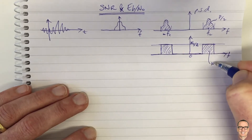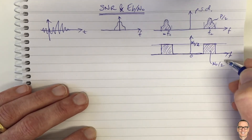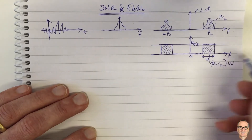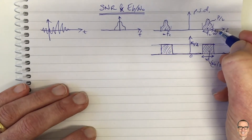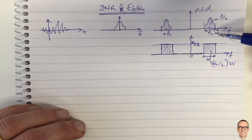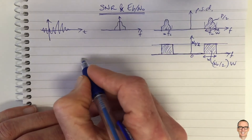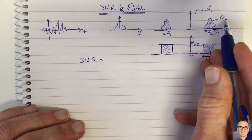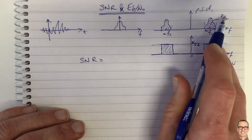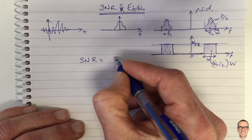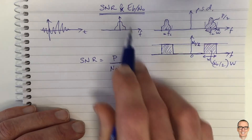The noise power that remains is N0/2 times W times 2 (for the double-sided bandwidth), where W is the bandwidth of our signal. So the signal-to-noise ratio is the power ratio: this signal area divided by this noise area. That gives us P/2 divided by N0/2 times W — the twos cancel — so SNR equals P divided by N0 times W. This is a ratio of powers.